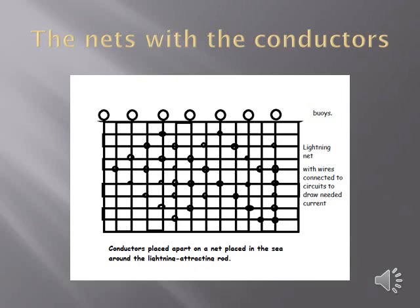The nets with the conductors: nets are configured with conductors 3 attached to them at intervals so that they are spaced apart in the water. The nets float in the water, buoyed up by buoys and floaters attached to the top of the nets.